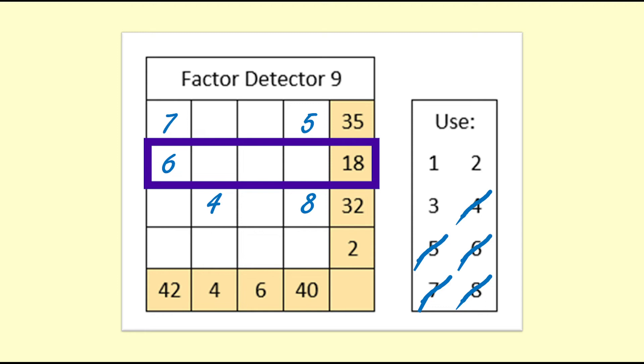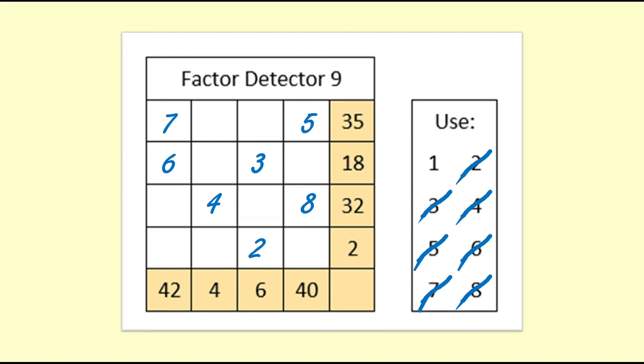Let's finish off the 18 row. 6 times 3 equals 18. The 3 goes into the 6 column. Now we'll need a 2 in that column which will go on the bottom row and we finish off with a 1 in the row with the 2 and the column with 4.